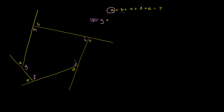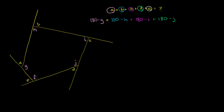Then we have plus B, but B we can write in terms of the interior angle — it's going to be 180 minus H, because these two angles are supplementary. So this is 180 minus H. We can do the same thing for each of them: C is 180 minus I, so plus 180 minus I. D is 180 minus J, so plus 180 minus J. And finally E is 180 minus F, so plus 180 minus F.